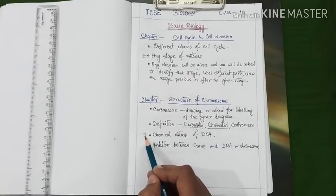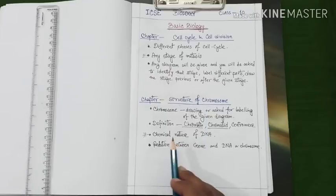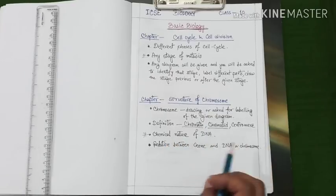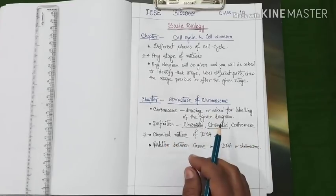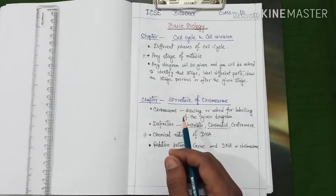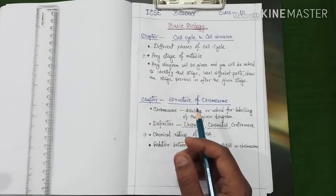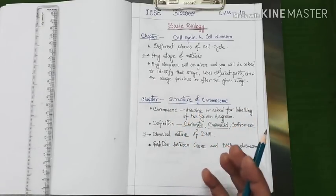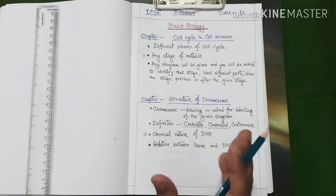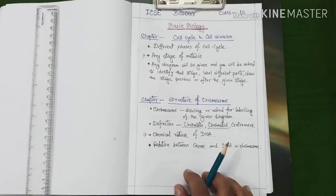Next important question. This is very vital question under this chapter is chemical nature of DNA. We all know that the basic unit of DNA structure is nucleotide. So you need to know the details of the nucleotide. How the nucleotides are formed and how those building blocks help to form the entire DNA structure.